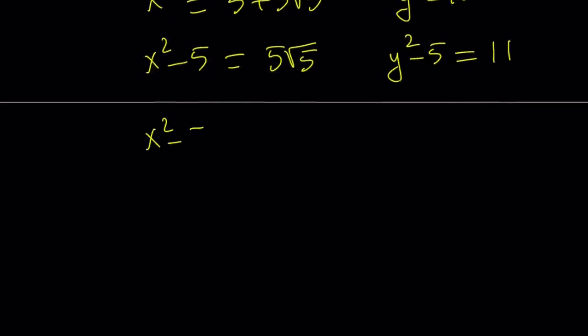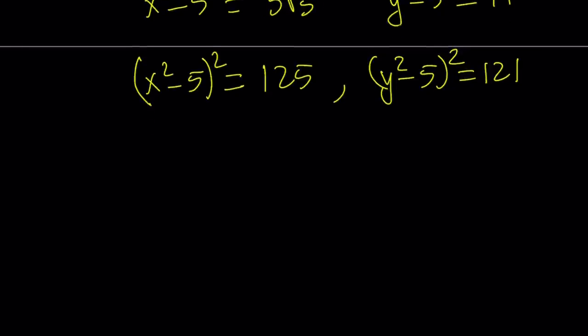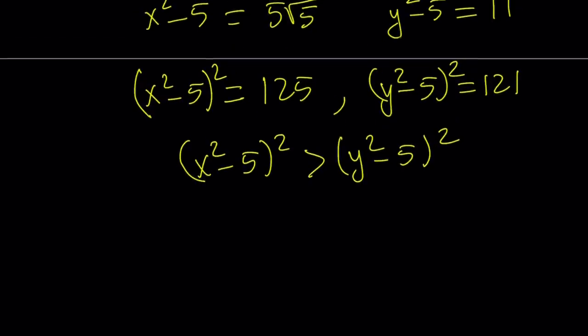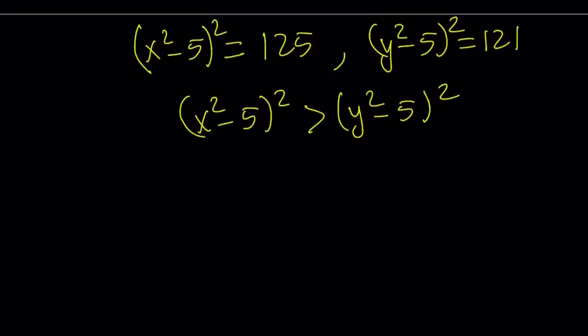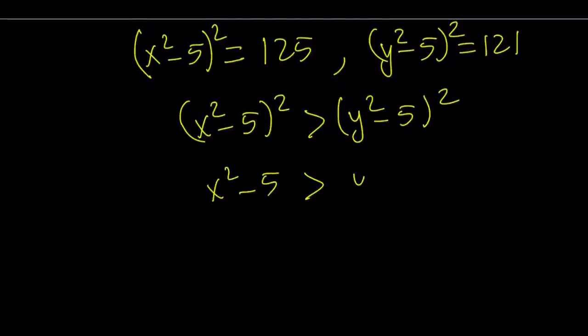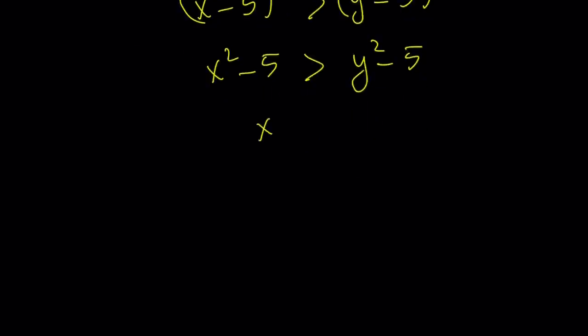Now, I'm going to square both sides. So, x squared minus 5 quantity squared is greater than y squared minus 5 quantity squared. Now, I can square both sides because notice that everything is positive and we can backtrace everything here. So, x squared minus 5 is going to be greater than y squared minus 5. And then from here, x squared is going to be greater than y squared. Since x and y are both positive, x is going to be greater than y.